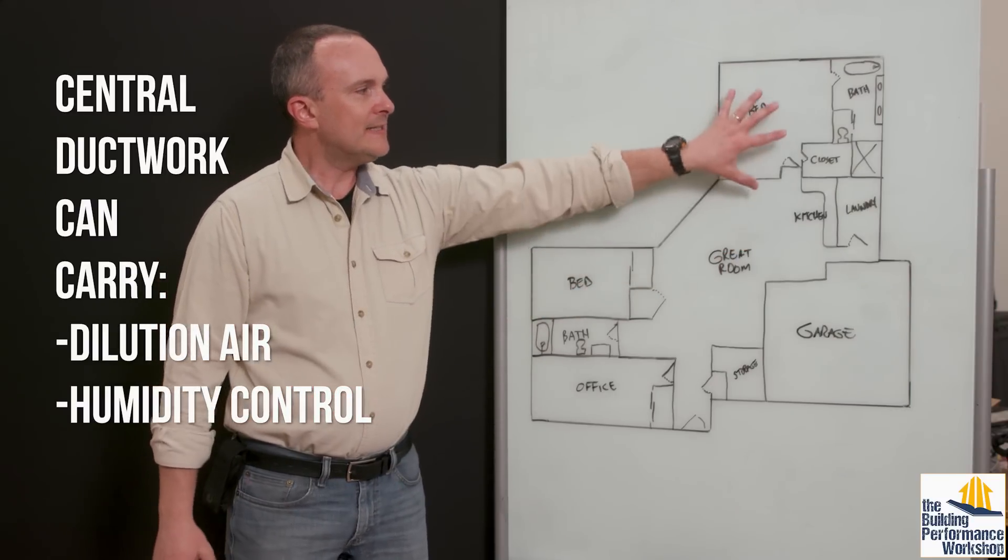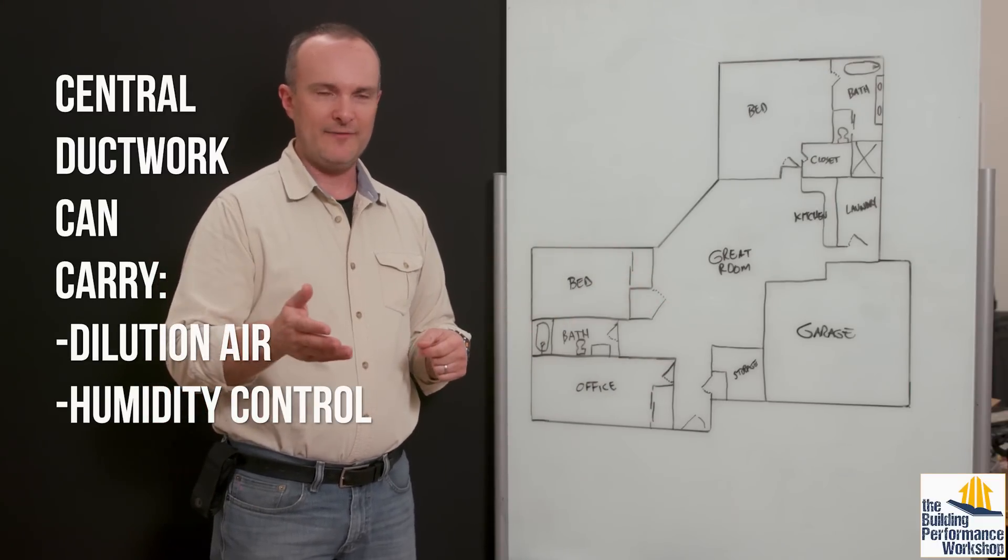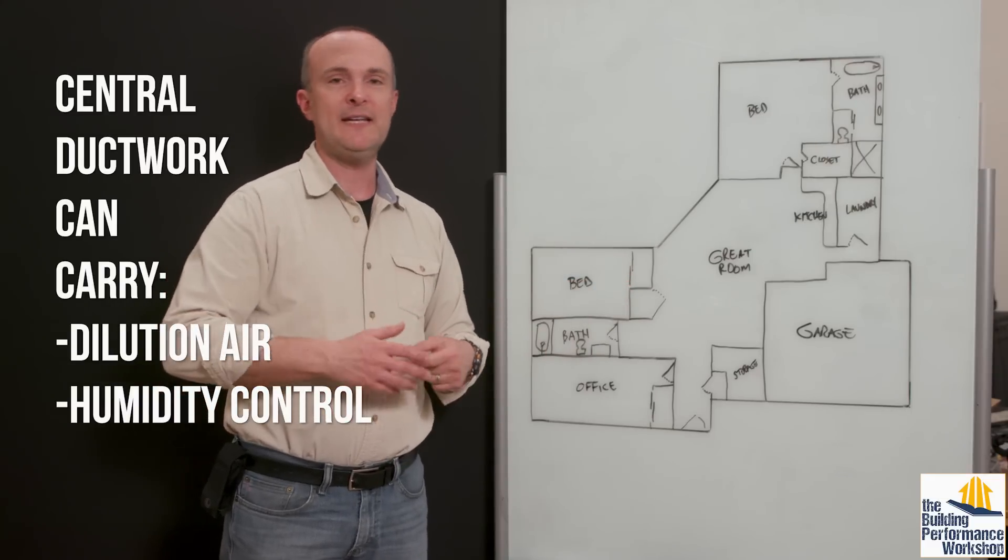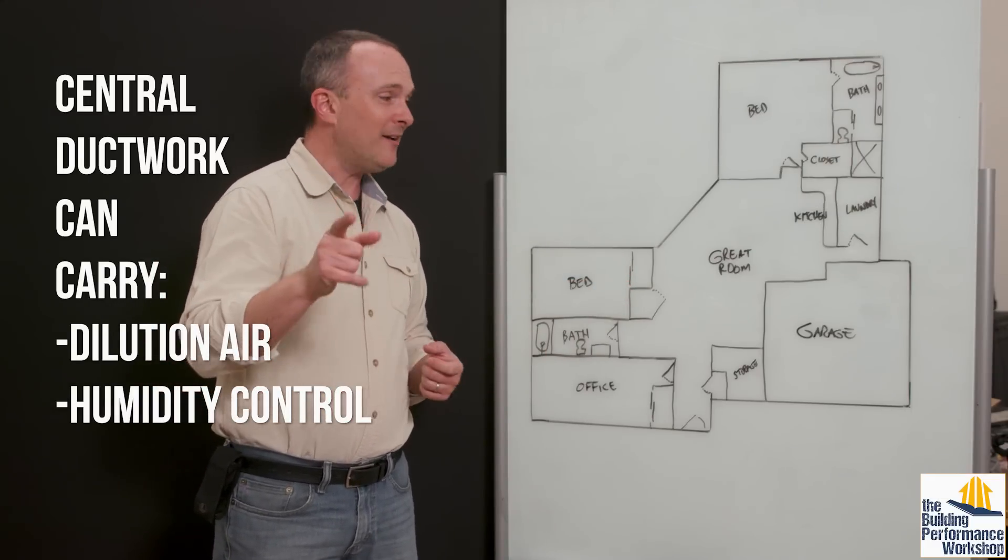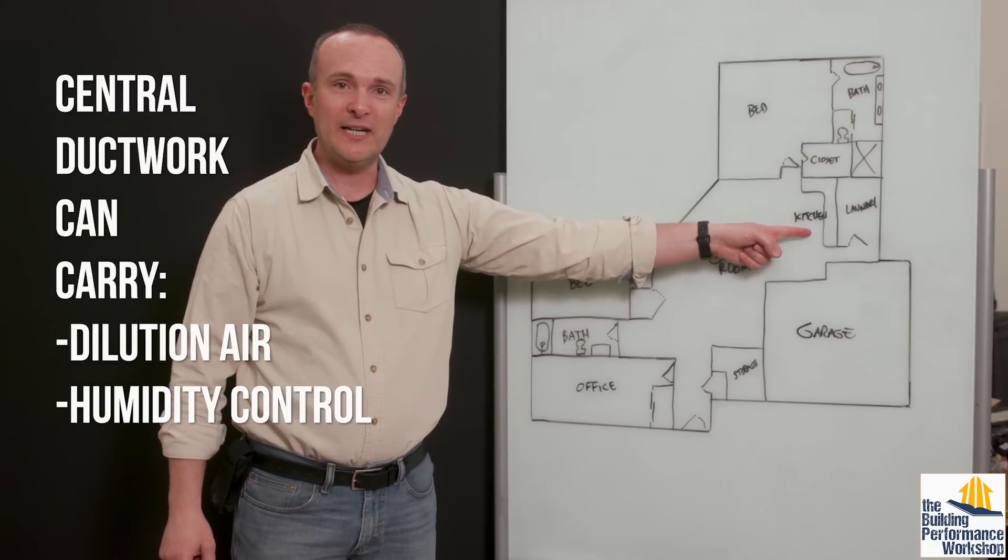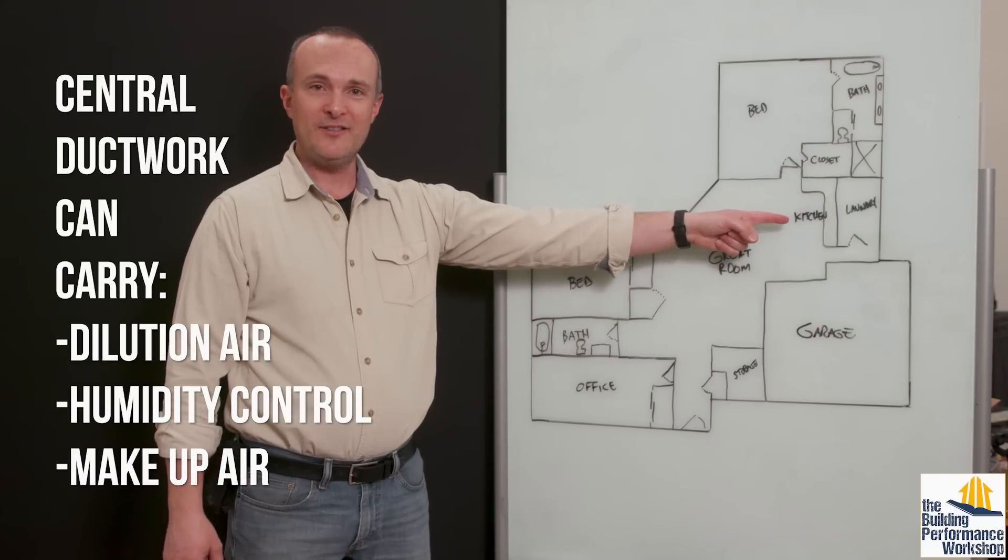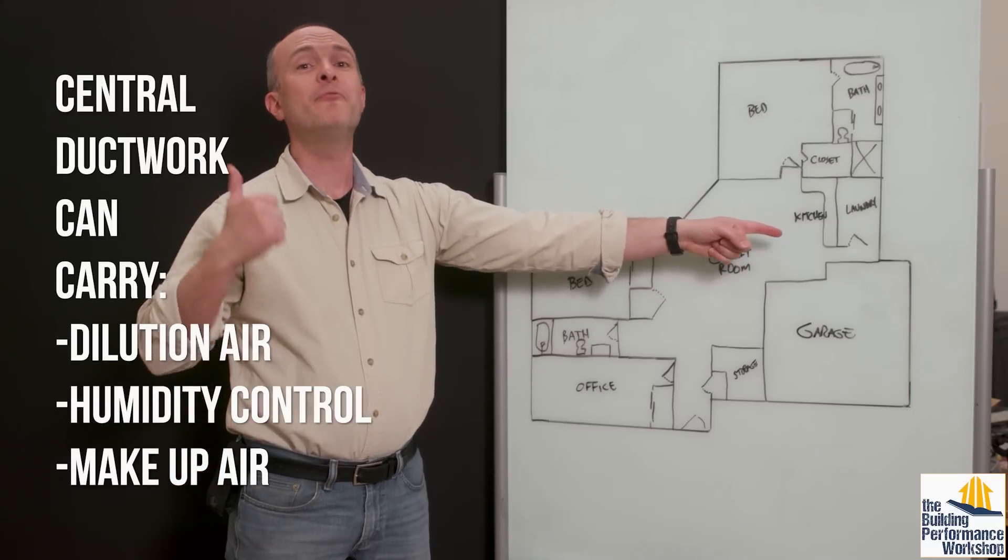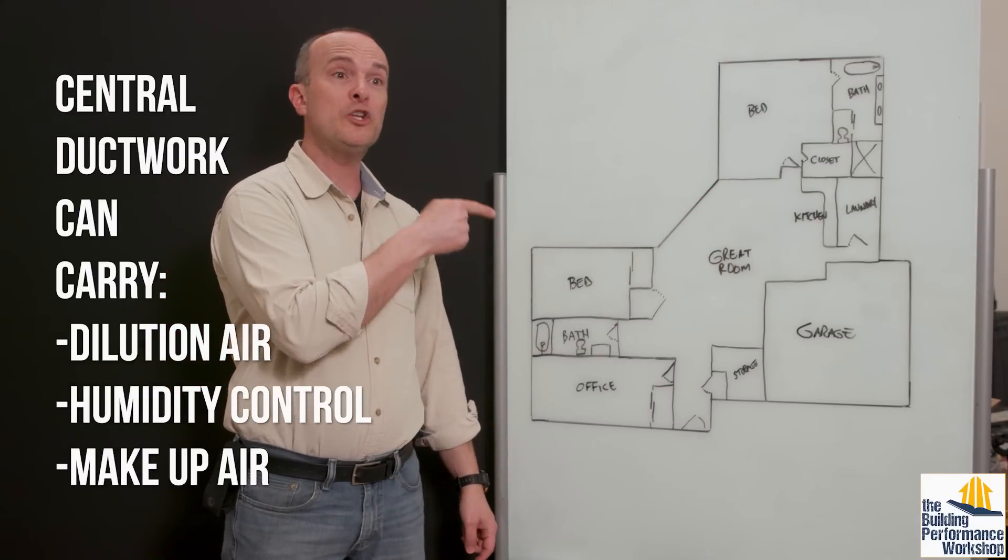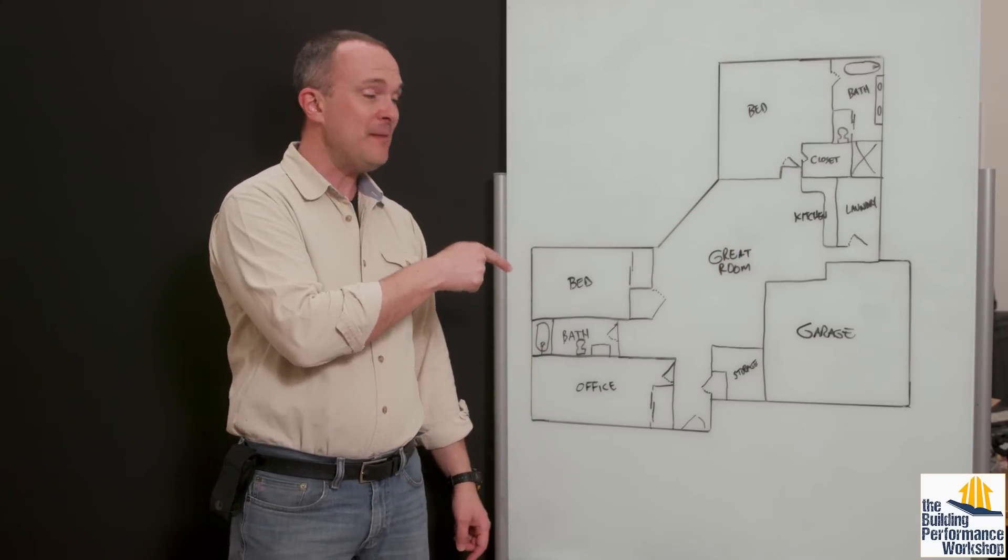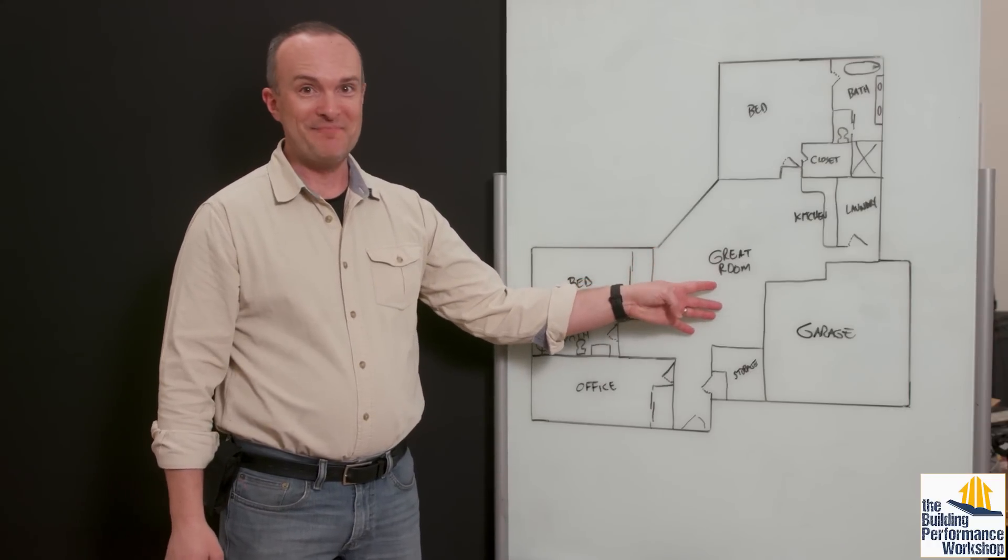So this duct system might not just deliver 600 CFM of heating and cooling, that ton and a half. It might also deliver 350 CFM for the dehumidifier. It might also deliver 150 CFM for your ERV. It might also deliver, in our case of our kitchen over here, makeup air because our kitchen is going to have an exhaust hood in it that goes outside and it's going to dump 400 CFM outside. That 400 CFM in a house like this, which the blower door test on this house might be 400 CFM 50.